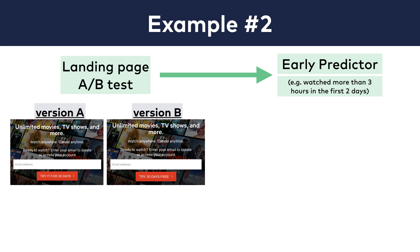Let's say that Netflix runs the numbers and finds that if a user watched Netflix for more than 3 hours in the first two days of her trial period, then there is an 80% probability that she will stay a paying customer. They can use that early predictor for their A-B tests, and they won't have to wait 30 days to get the first data points — only two. Again, this example is purely hypothetical, but I'm pretty sure that Netflix's data science team has already run these predictions and has a super accurate and probably even more sophisticated early predictor system.